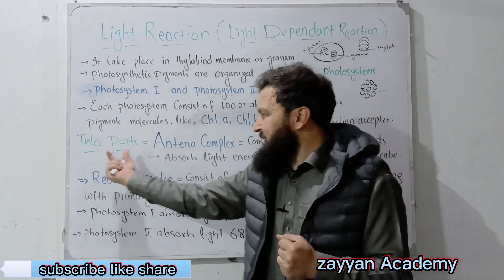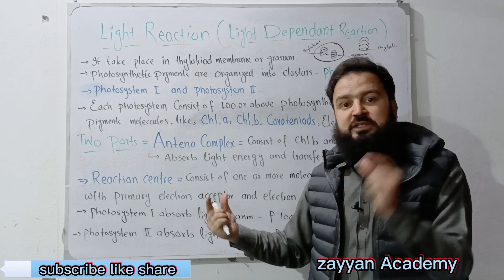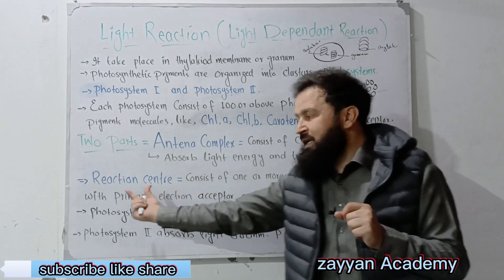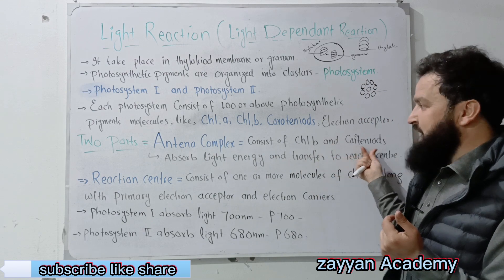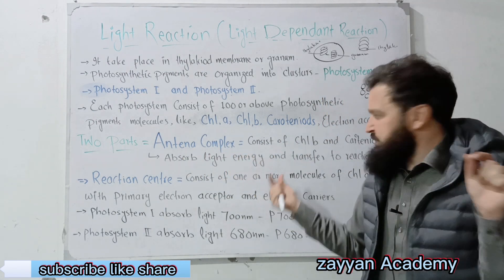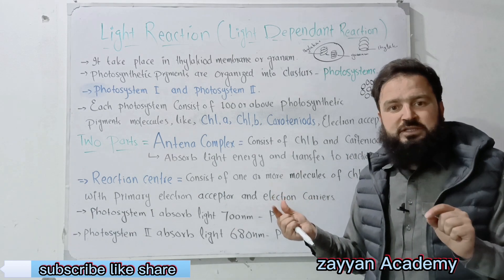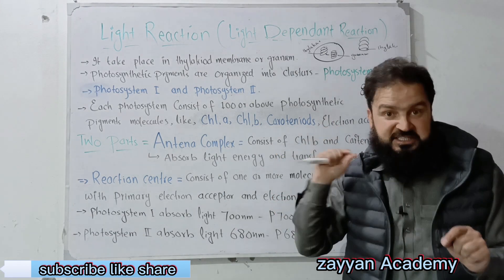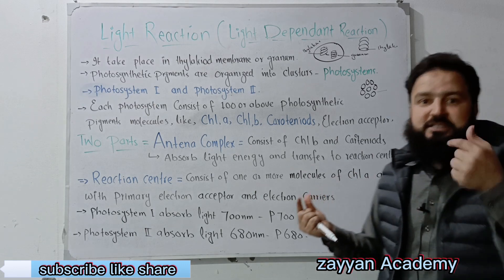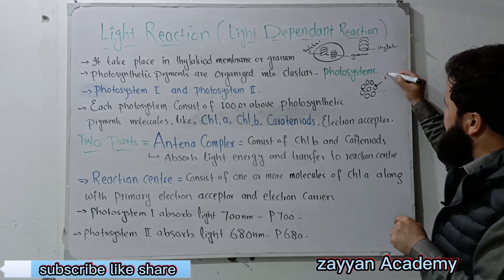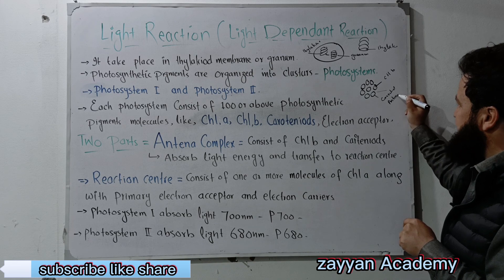It is a complex — the antenna complex — which consists of chlorophyll B and carotenoids. In the antenna complex, we have chlorophyll B molecules and carotenoids as photosynthetic pigments. The function of the antenna complex is to absorb light energy and transfer it to the reaction center.